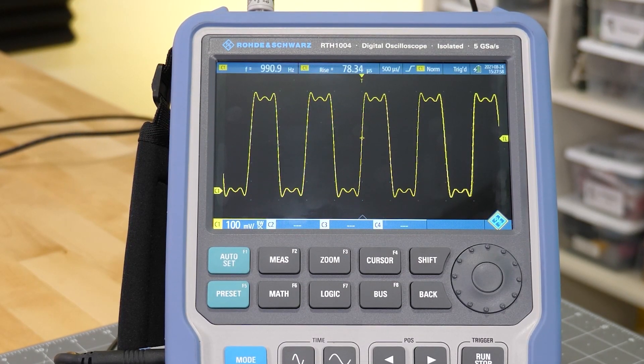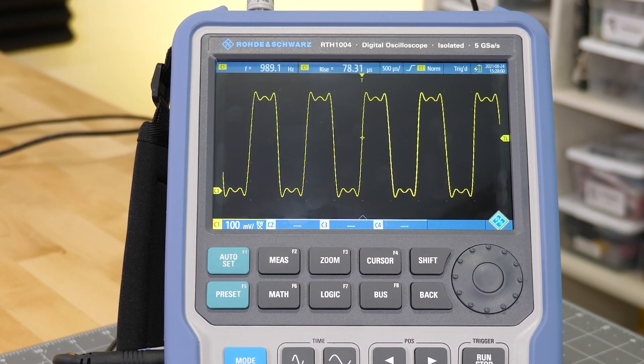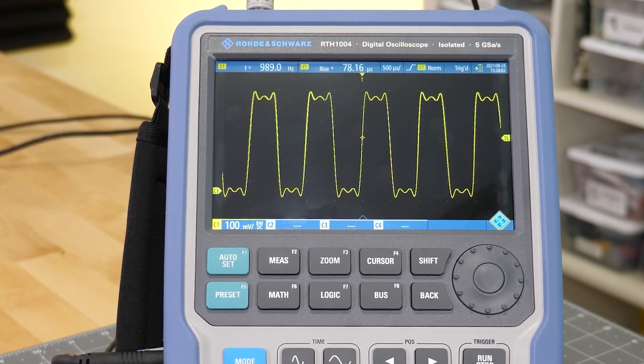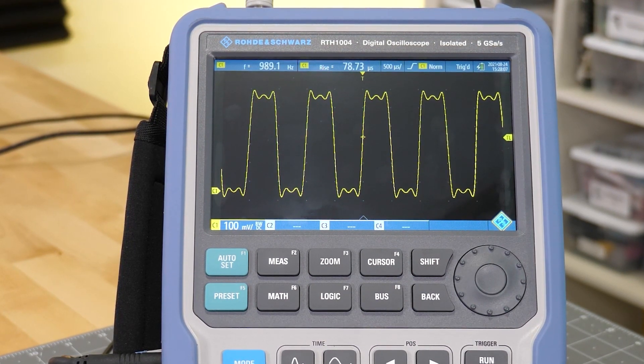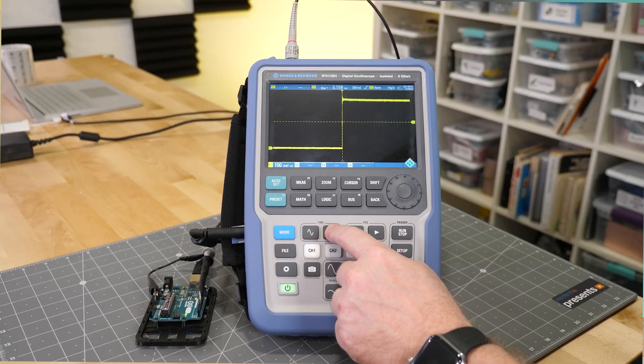4.4 kHz and 5 kHz are pretty close to each other, which means we're measuring a rise time near the fastest rise time that our scope, or in this case, filter, can measure, which means we're hitting our bandwidth limit.